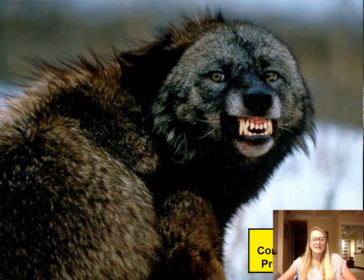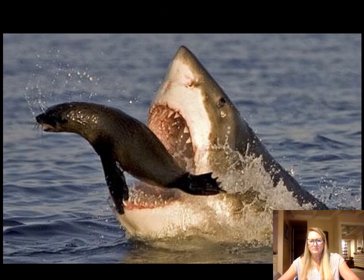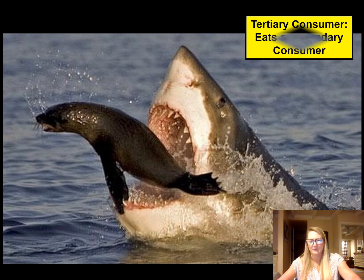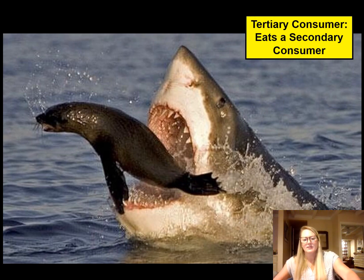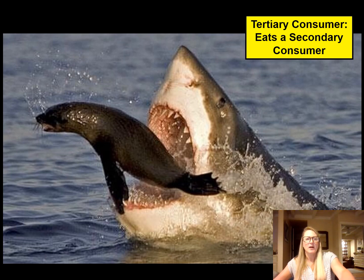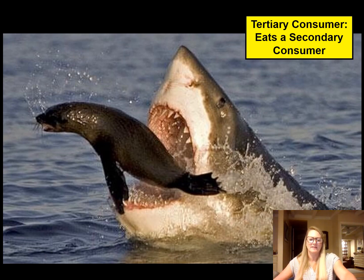Anything that eats a secondary consumer is called a tertiary consumer. Here you see a great white shark eating a seal. That seal probably ate a smaller fish, and that smaller fish probably ate some phytoplankton, so the shark would be classified as a tertiary consumer.